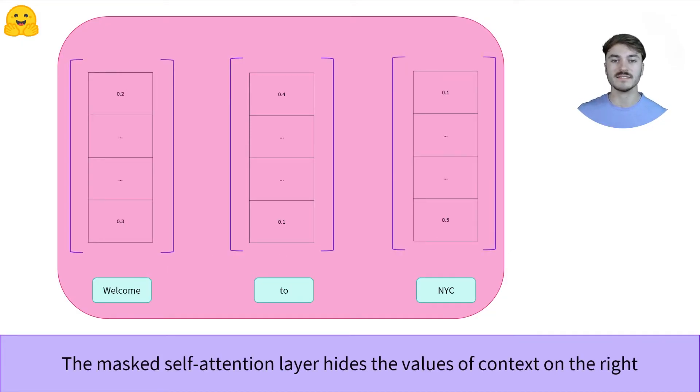The masked self-attention mechanism differs from the self-attention mechanism by using an additional mask to hide the context on either side of the word. The word's numerical representation will not be affected by the words in the hidden context.